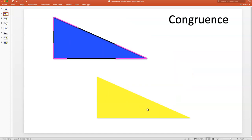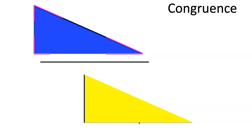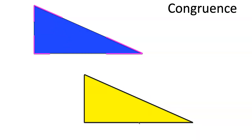Now let's look at these same two triangles. Since we know they are congruent, it tells us a lot. It tells us that all corresponding sides have the same length and corresponding angles have the same measure. When I say corresponding, I mean things that match up. For example, this side matches up with this side — so they correspond. And this angle corresponds with this angle. So corresponding sides have the same length and corresponding angles have the same measure.